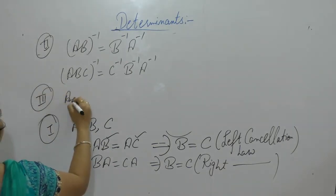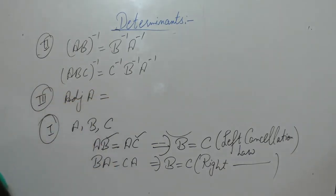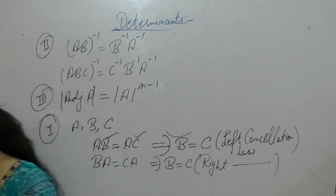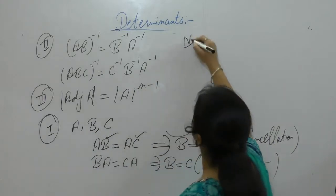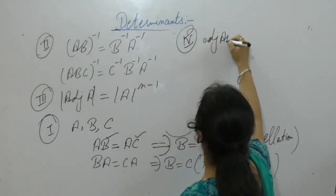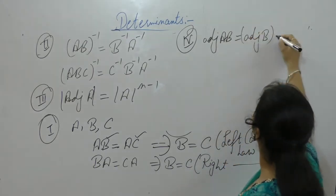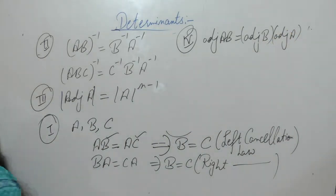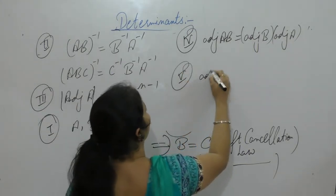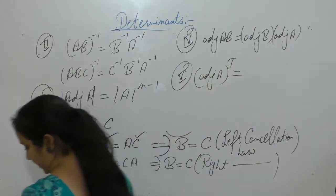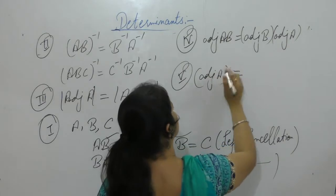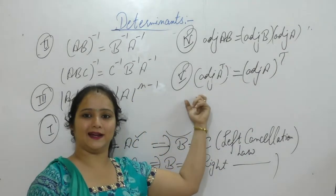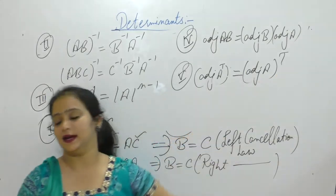The determinant of the adjoint of matrix A equals the determinant of A raised to the power N minus 1. Also, adjoint of (AB) equals adjoint of B into adjoint of A, where A and B are non-singular matrices. The adjoint of A transpose equals the transpose of the adjoint of A.